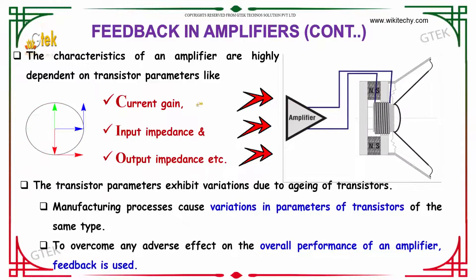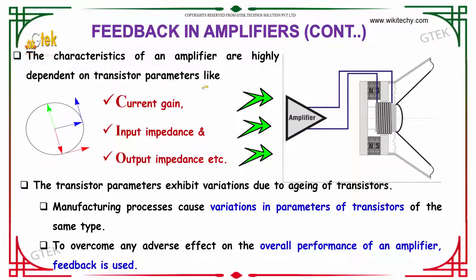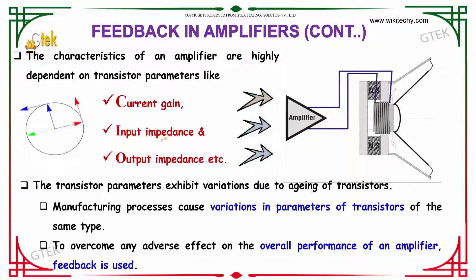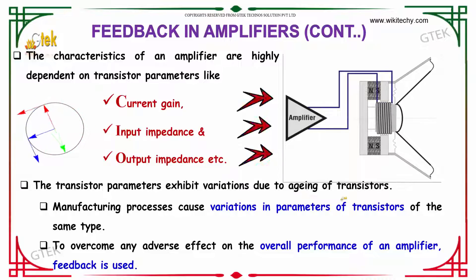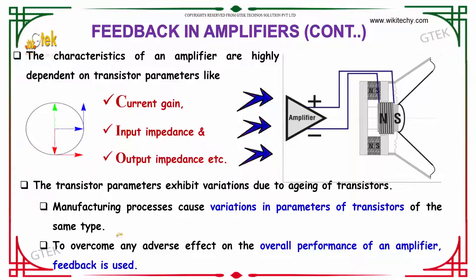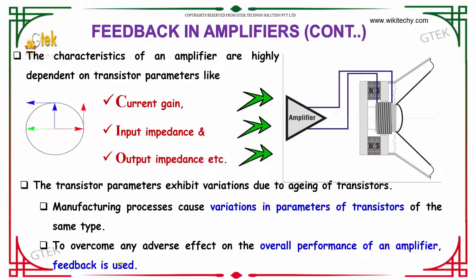The characteristics of a feedback amplifier are highly dependent on transistor parameters like the current gain, the input impedance, and finally the output impedance. The transistor parameters exhibit variations due to aging of transistors. The manufacturing process causes variation in parameters of transistors of the same type, and to overcome any adverse effect on the overall performance of an amplifier, feedback is used.